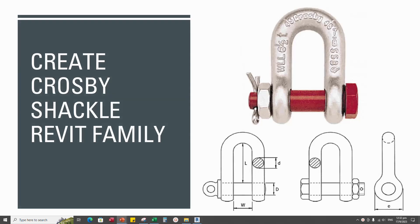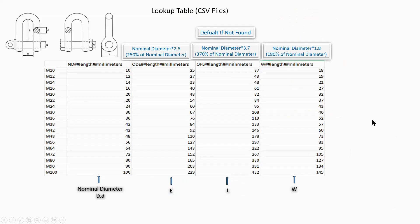Hello everyone. Today I would like to show you how to create a Crosby Shackle. In this tutorial, I will use and load in the created nut which is parameter controlled by lookup table. You can find and watch how to create a nut in the channel. I will create the bolt first and then load it into the main family. I will refer the data in the picture to create the parameter. I will use this lookup table CSV file to create the parametric family.